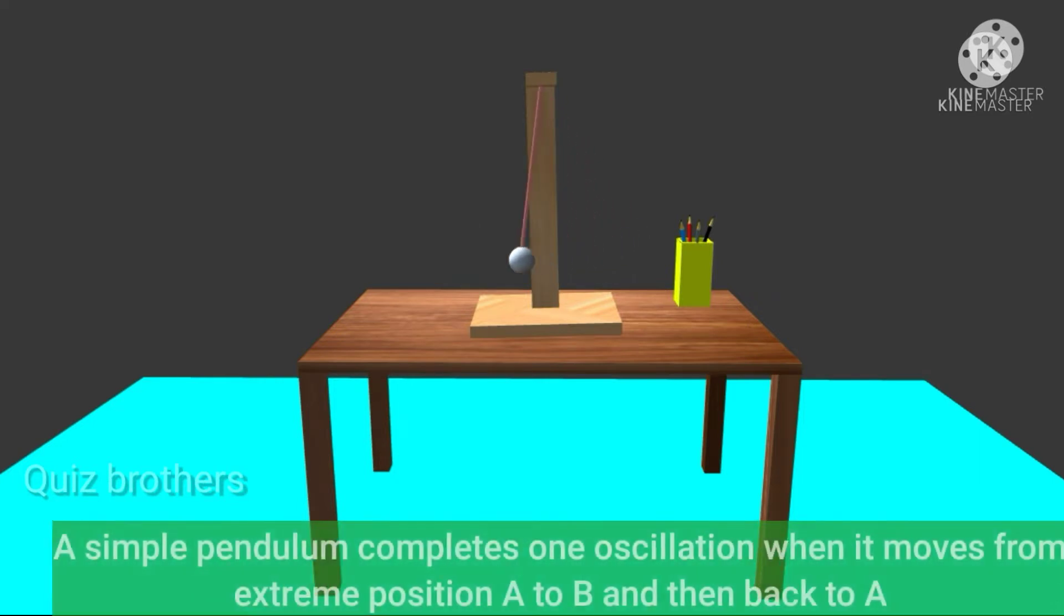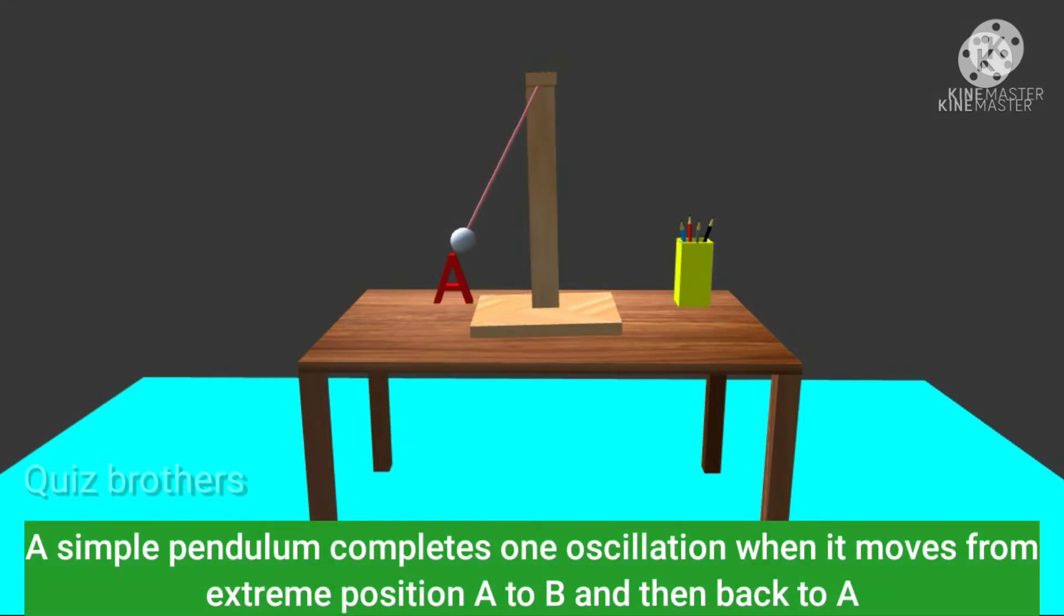A simple pendulum completes one oscillation when it moves from its extreme position A to B and then back to A.